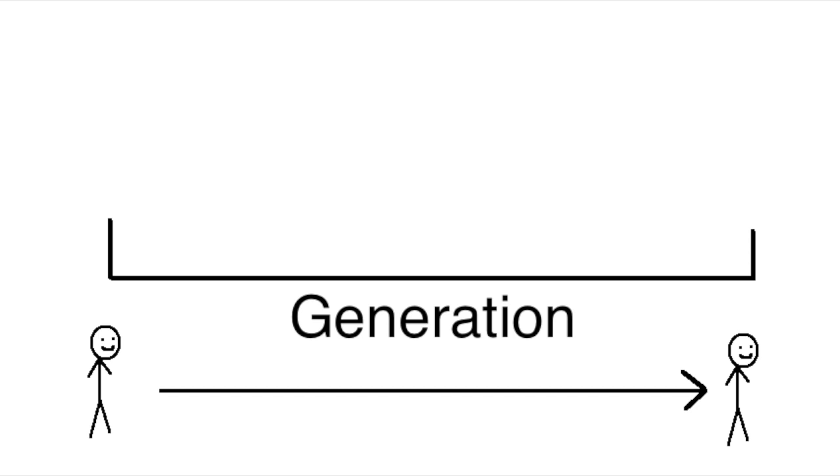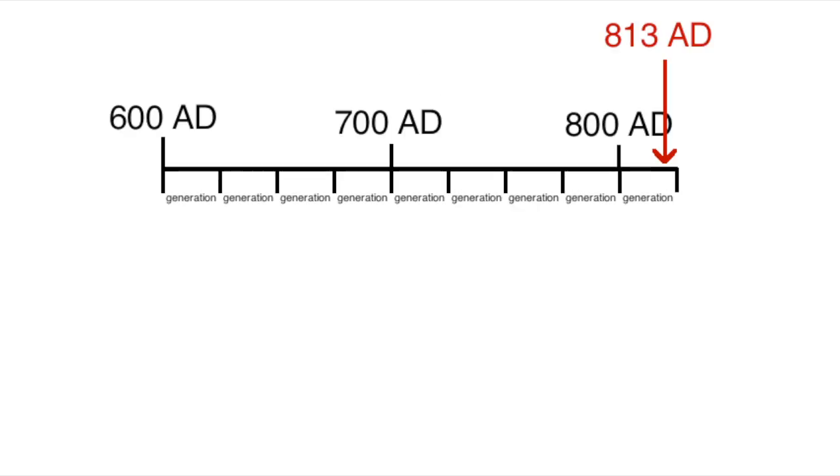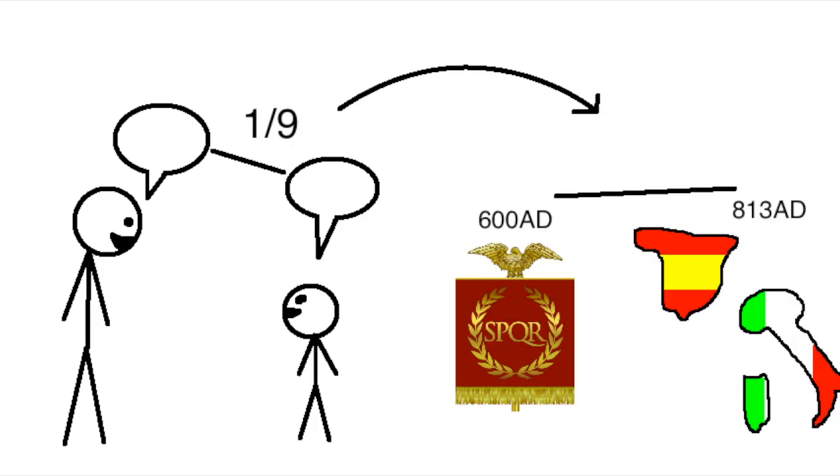Assuming an average generation length of, I don't know, 25 years? That means that in just nine generations, people's speech changed enough to make a formerly intelligible language unintelligible, and that on average during this period, people's speech was one-ninth as different from their parents' speech as 600's vulgar Latin was from 800's proto-French or Italian or whatever.